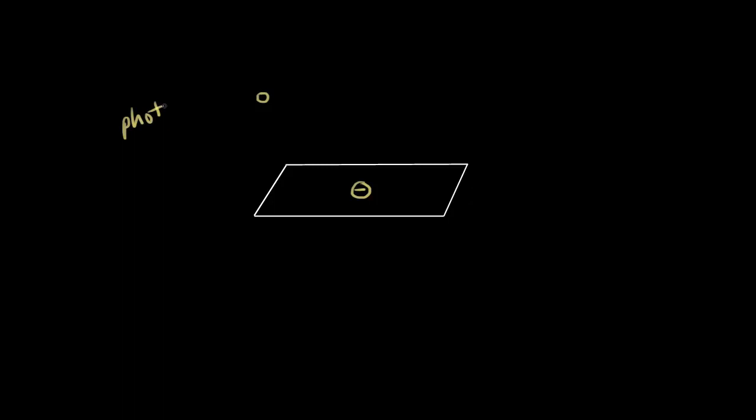If you shine a light on the metal — the right kind of light with the right kind of frequency — you can actually knock some of those electrons loose, which causes a current of electrons to flow. This is kind of like a collision between two particles if we think about light as being a particle. I'm going to draw in a particle of light, which we call a photon. This photon is massless, and it's going to hit the electron, and if the photon has enough energy it can free the electron and knock it loose.